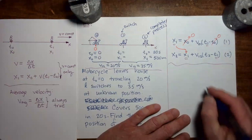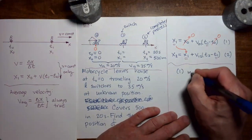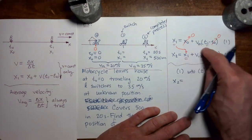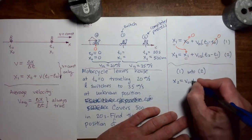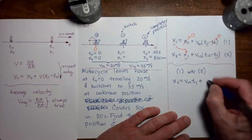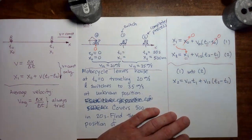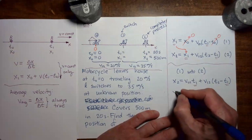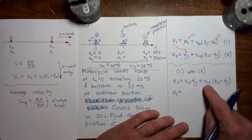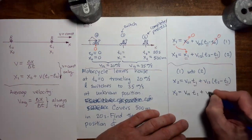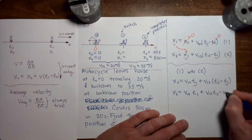Continuing with the algebra — doing one into two — that gives us: x2 equals x1, but substituting for x1 we get v01 times t1, plus the term v12 times (t2 minus t1). The one unknown we're trying to solve for is t1. Let's distribute v12 across the parentheses, giving us v01 t1 plus v12 t2 minus v12 t1.